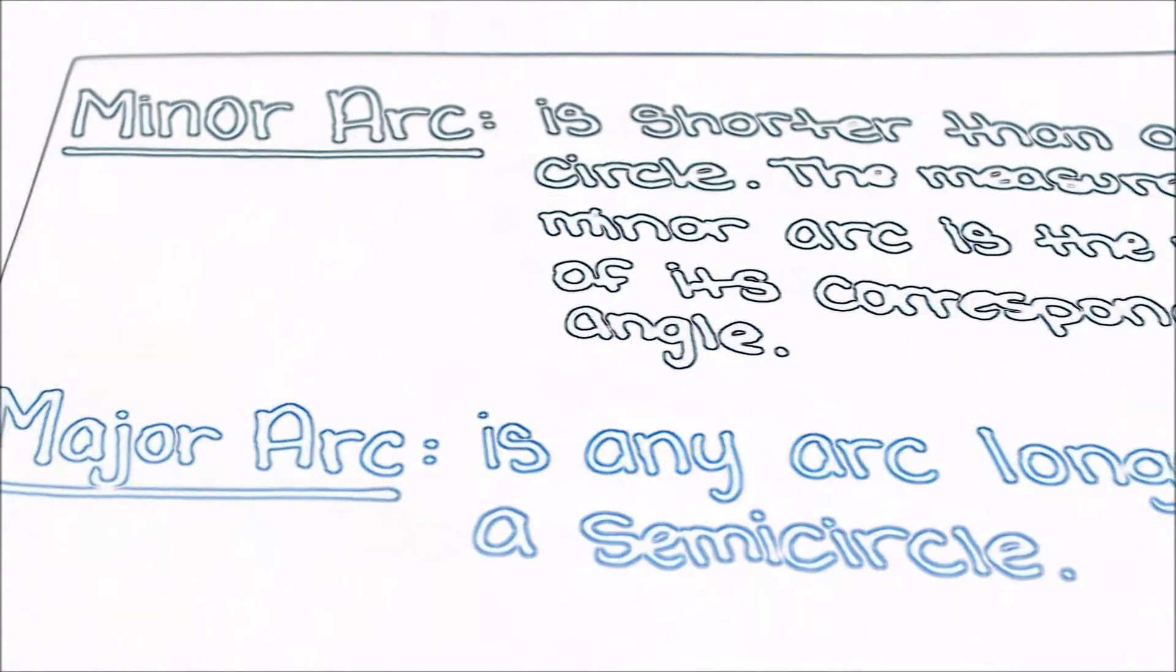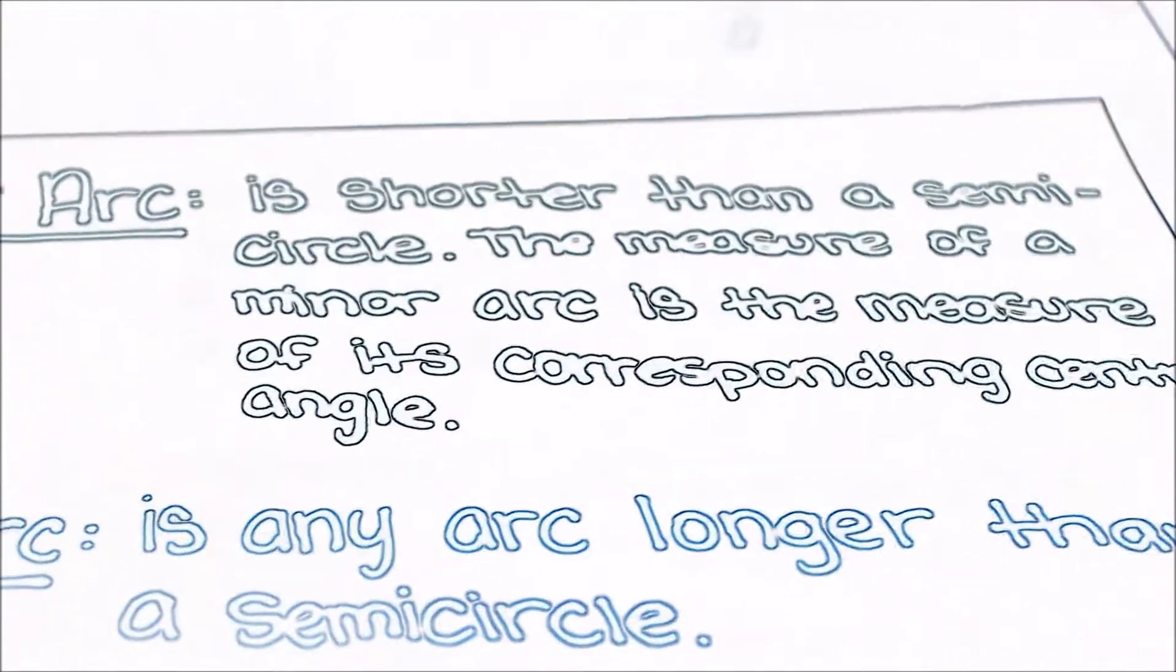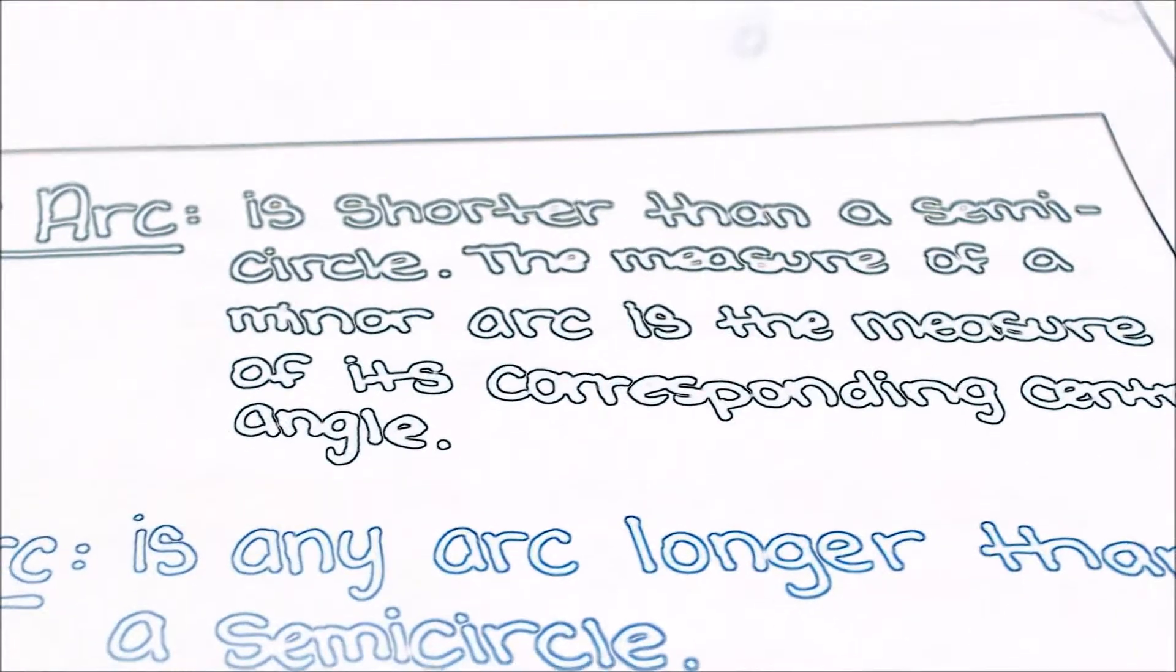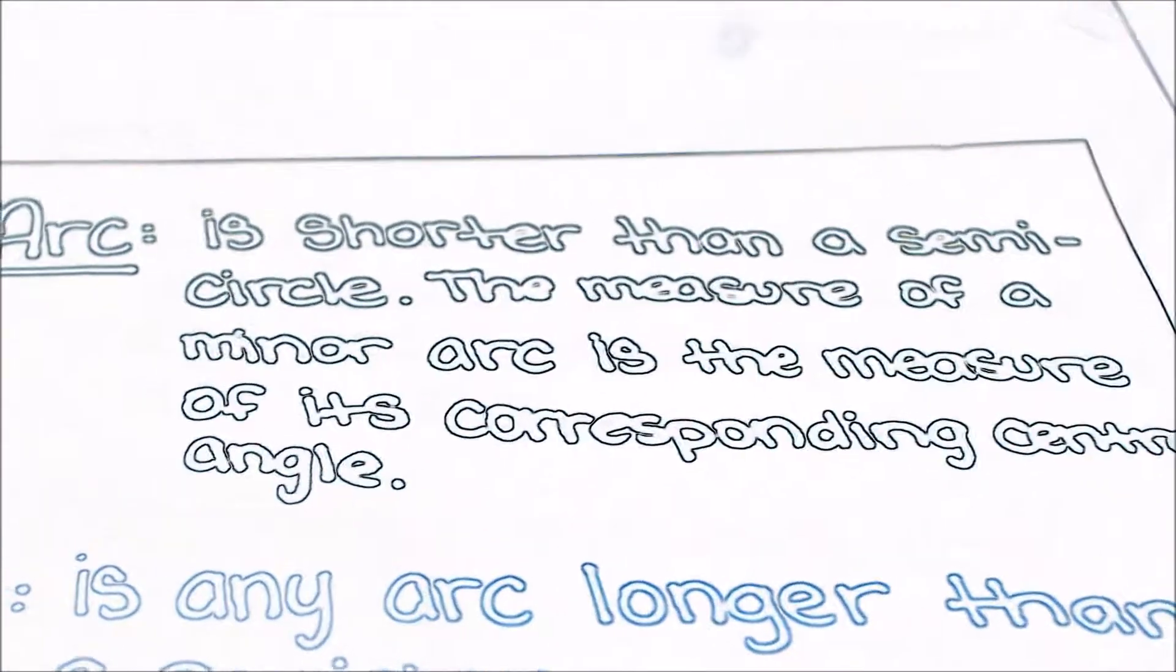Let's go over some vocabulary for circles. A minor arc is shorter than a semicircle. The measure of a minor arc is the measure of its corresponding central angle.